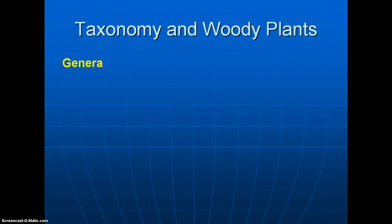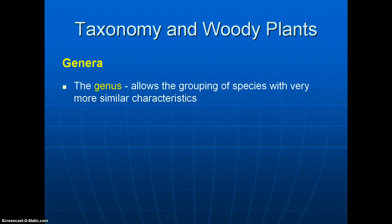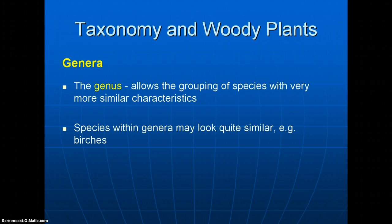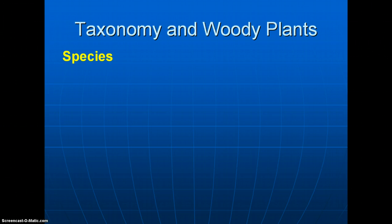The next level of classification below the family is the genera — plural for genus. The genus is very important; we're getting down to specific things where plants become quite recognizable. The genus allows grouping of species with very similar characteristics — more so than you'd see at the family level. For example, the birches are all in the same genus, Betula. The genus also becomes part of the plant's scientific name, which we'll discuss further.